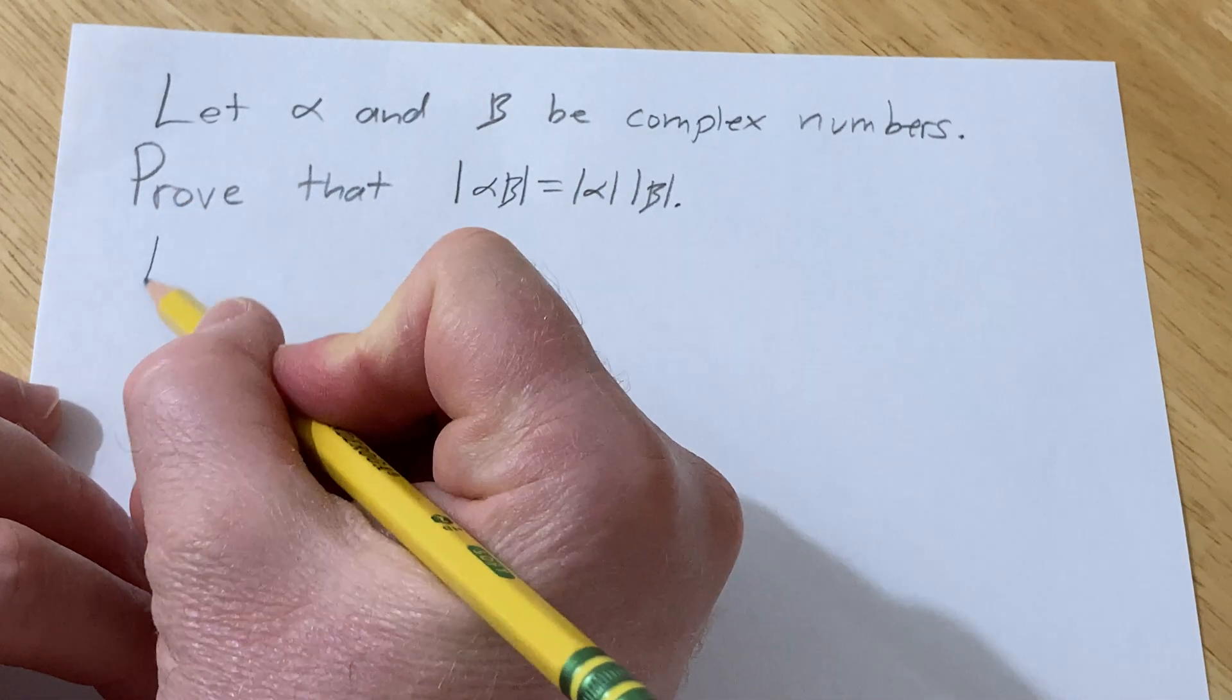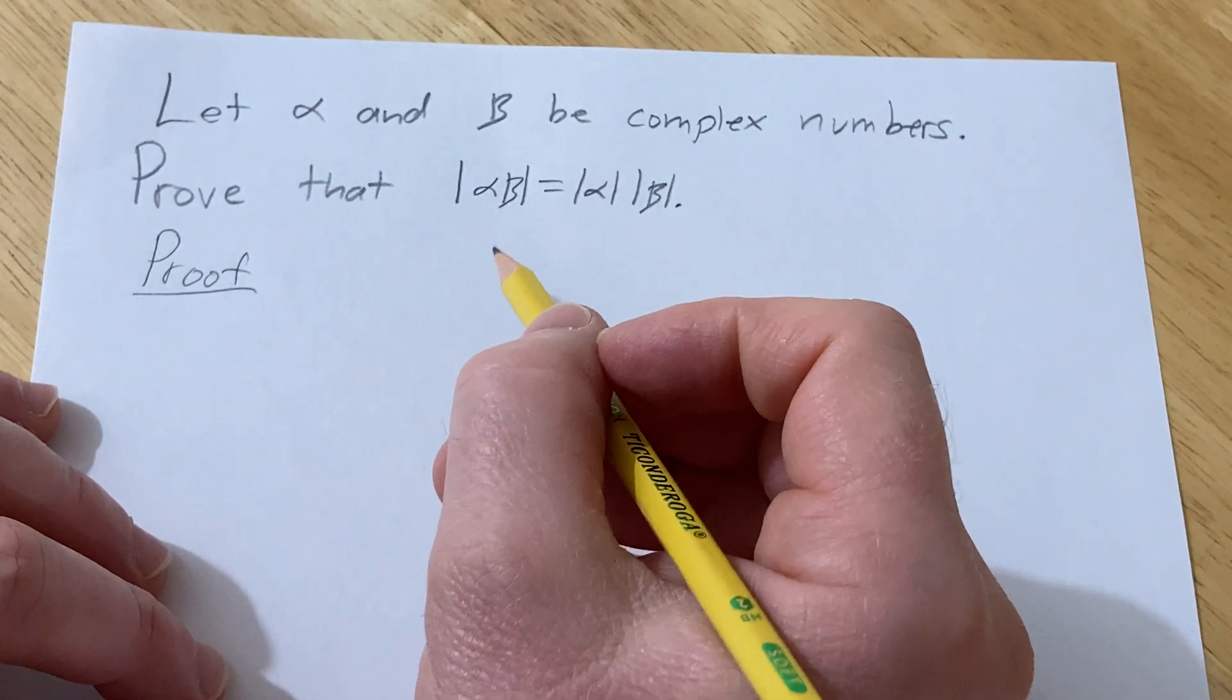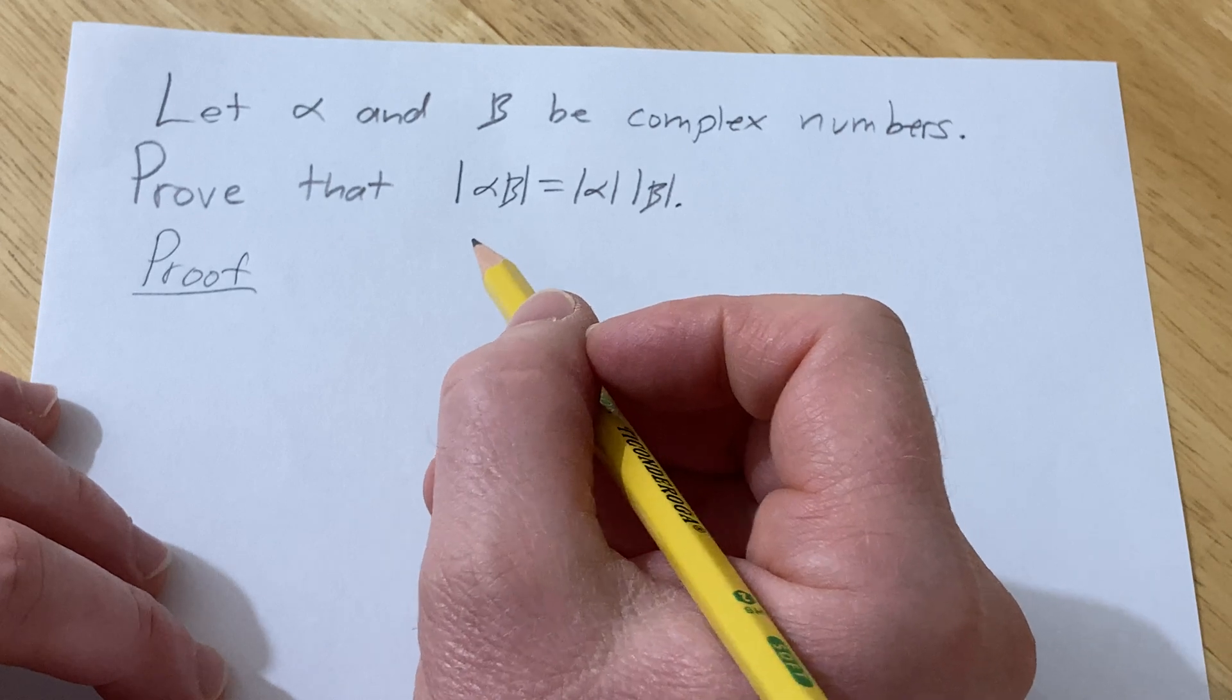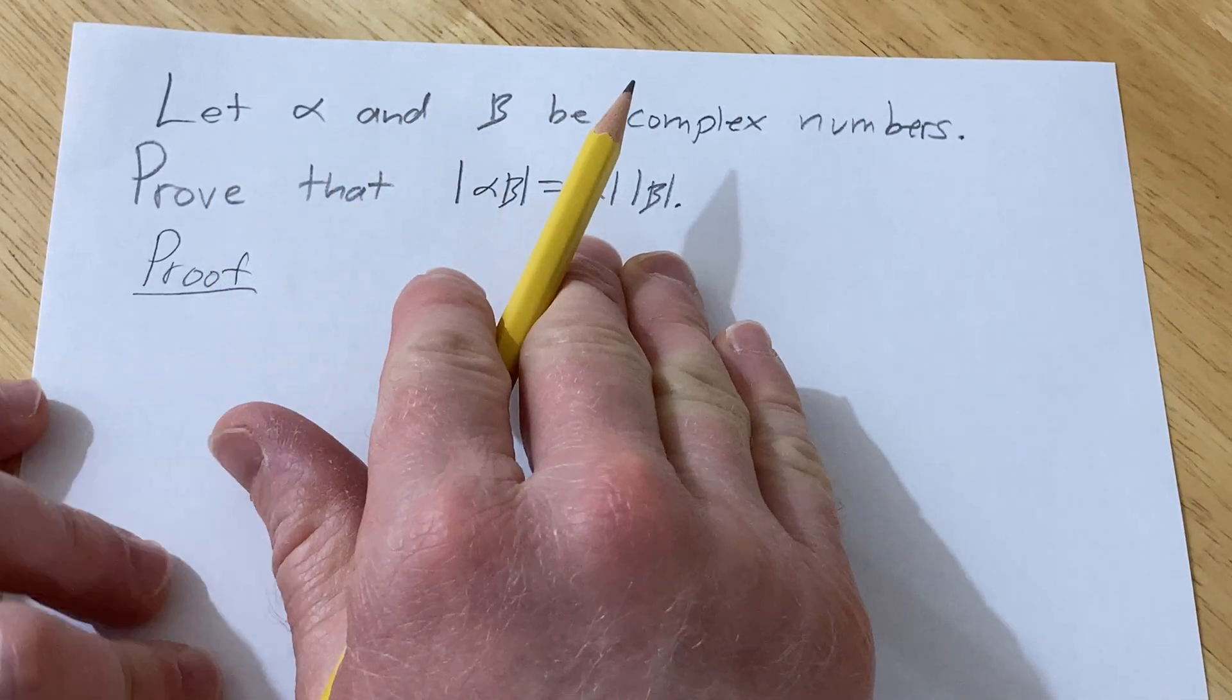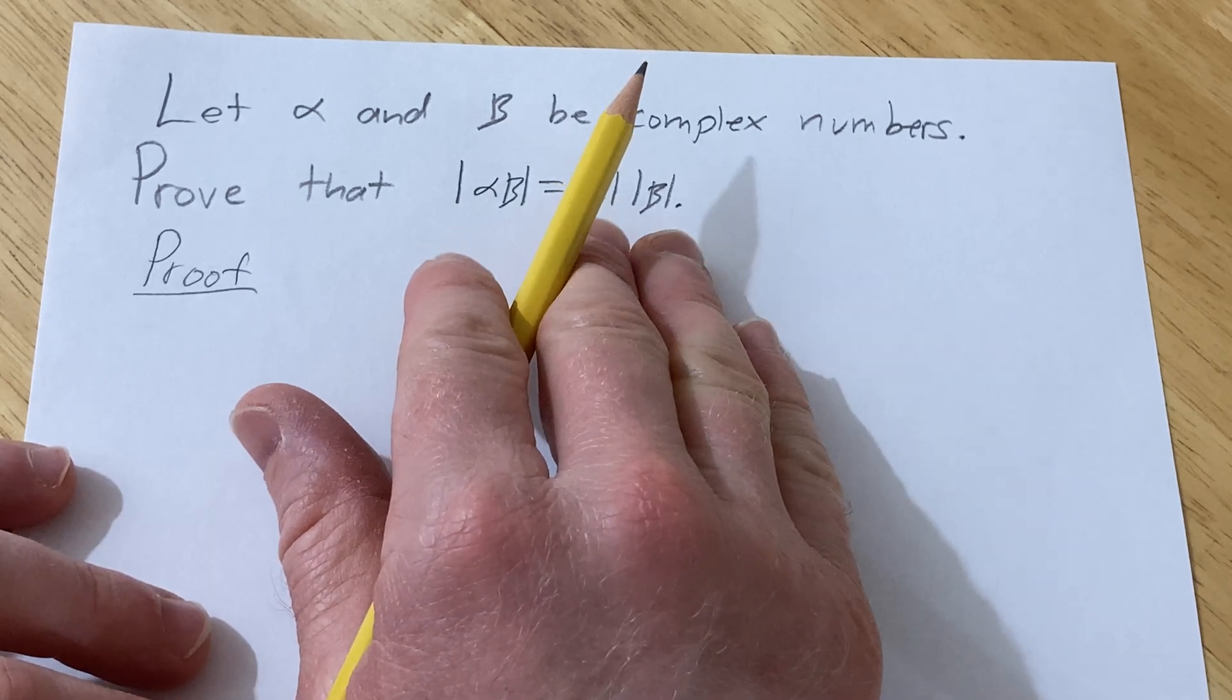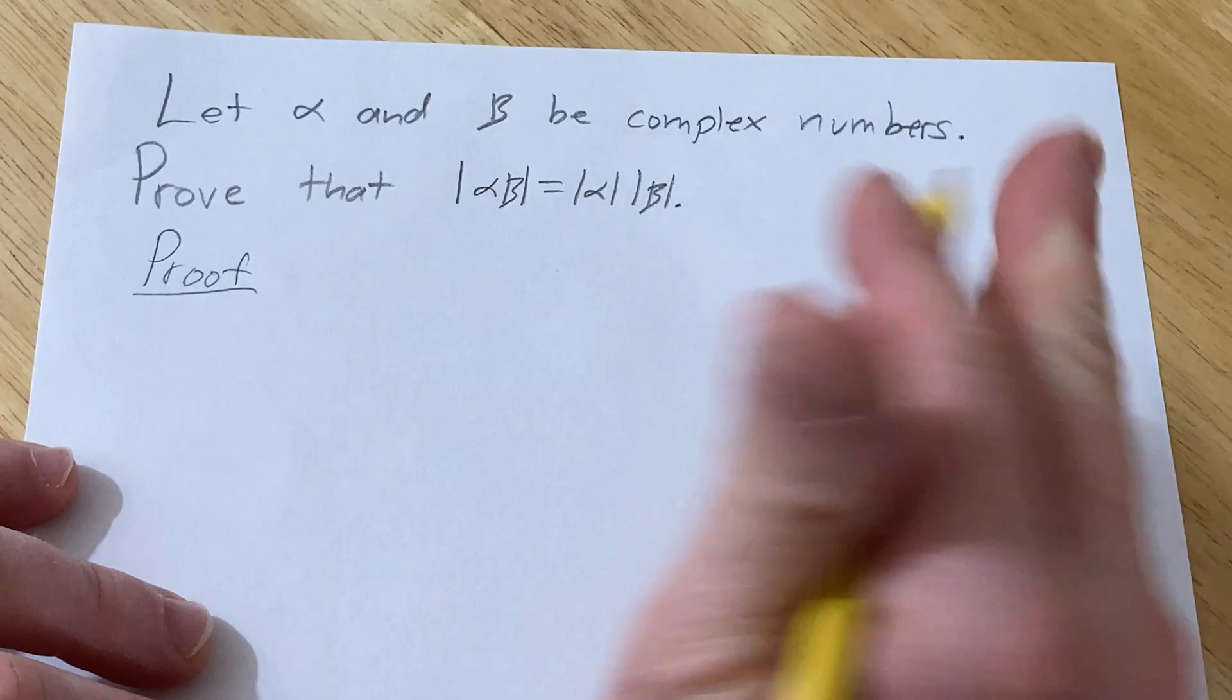So let's go ahead and go through the proof. To prove this, what we're going to do to make things easier is we're basically going to prove that this squared is equal to this squared. And the reason we're going to do that is because there's a very powerful thing that we can do with the modulus squared.